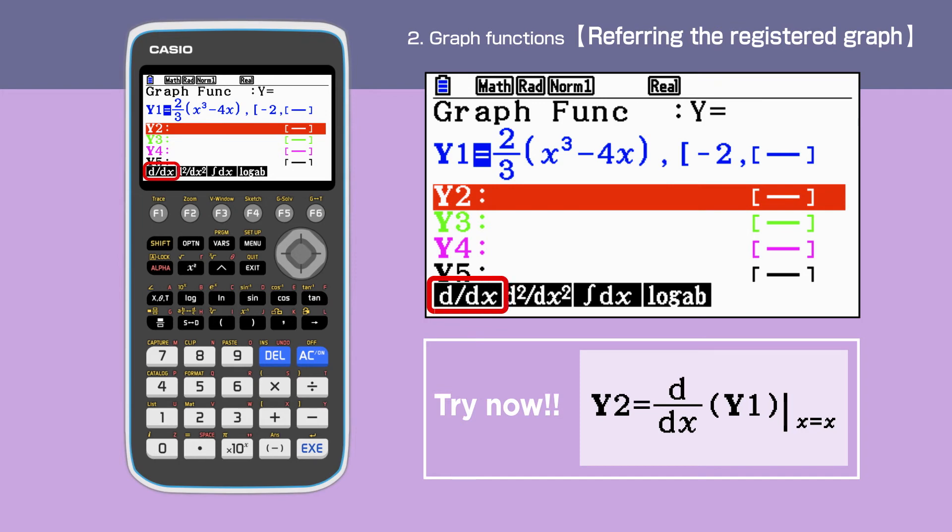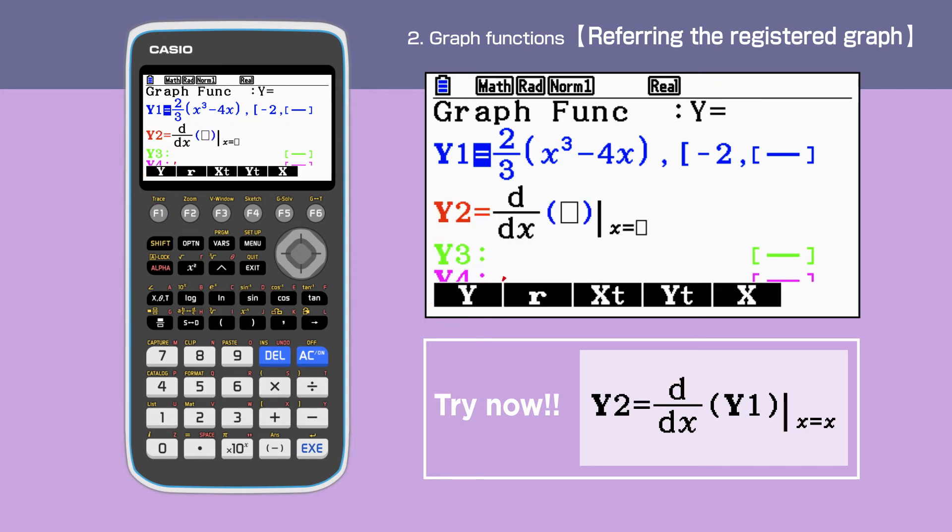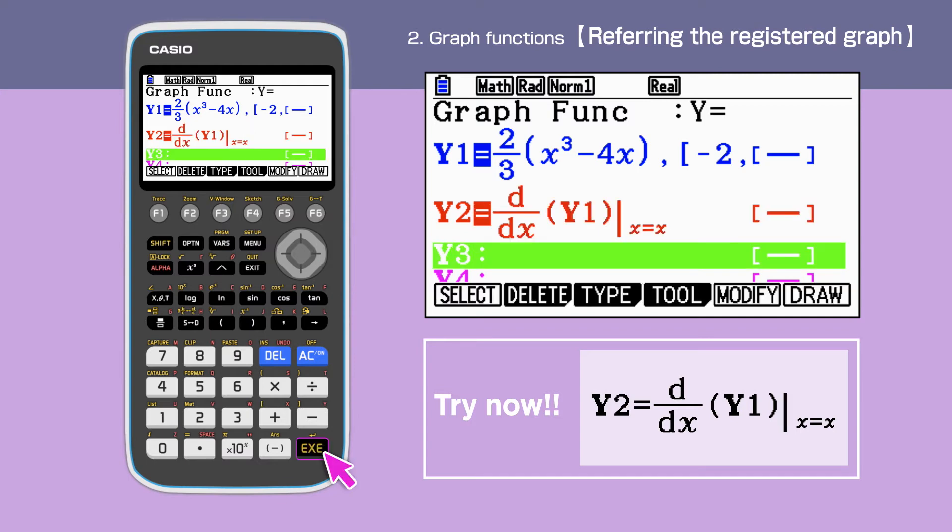Enter F1 to select d by dx. Then press F1, 1 to choose the function y1. Y1 is the equation we are differentiating here. Press execute to confirm.